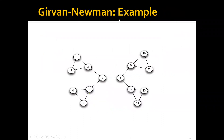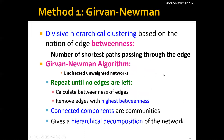As a simple example, consider this smaller graph. We compute the betweenness of each edge in this network and can see that the edge in the middle has the highest betweenness. It makes a lot of sense to remove this middle edge and thereby split the whole graph into two communities — one on the left and the other on the right. This is the general idea of the famous Girvan-Newman algorithm.